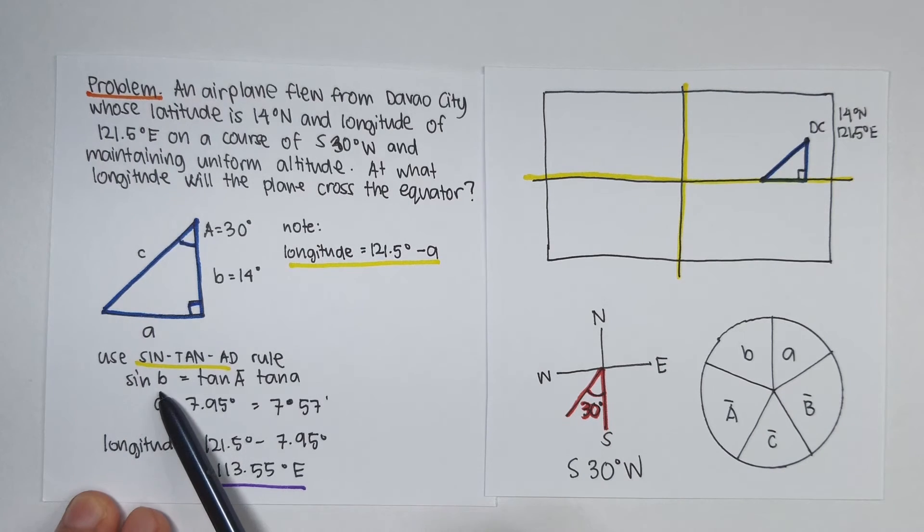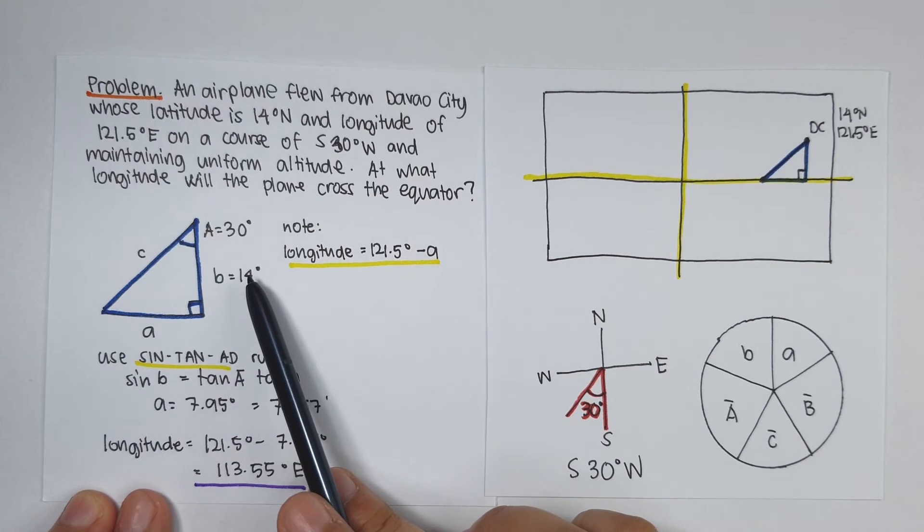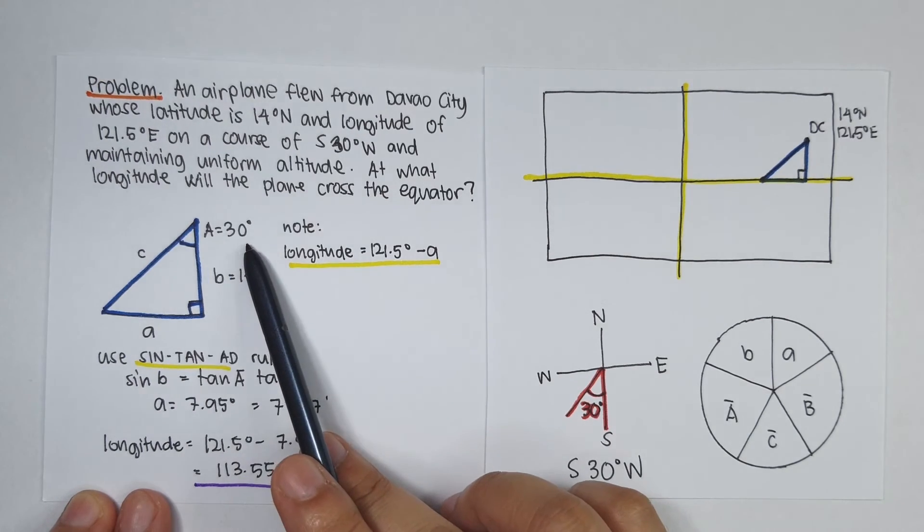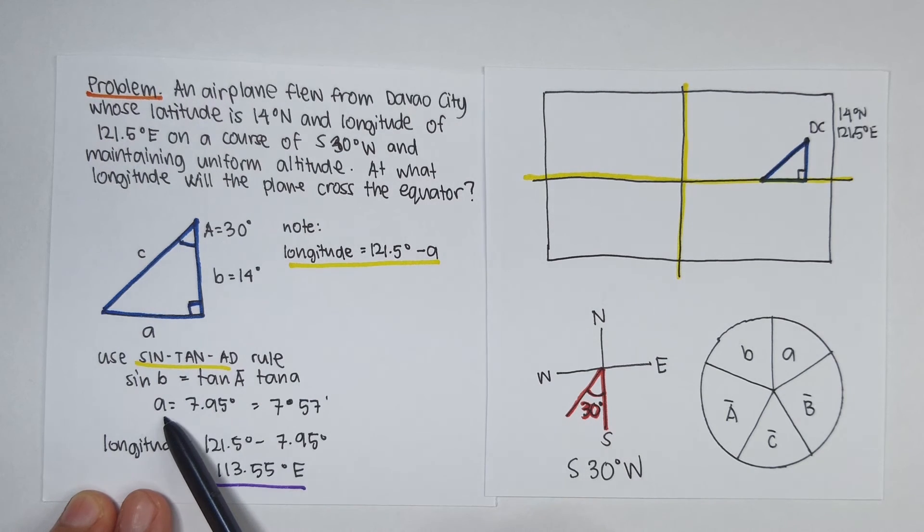So sine 14 degrees is equal to tangent of 90 minus 30 times tangent of A. So solving for A, you get 7.95 degrees.